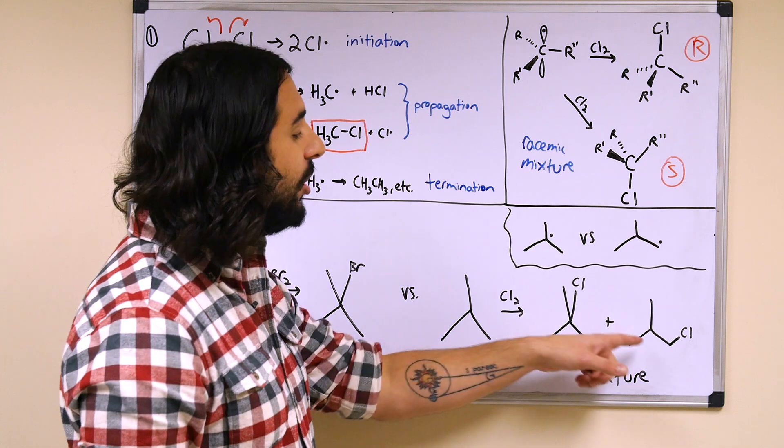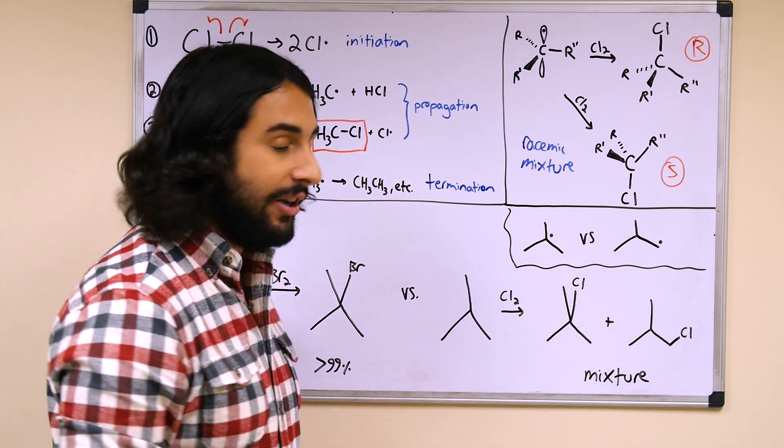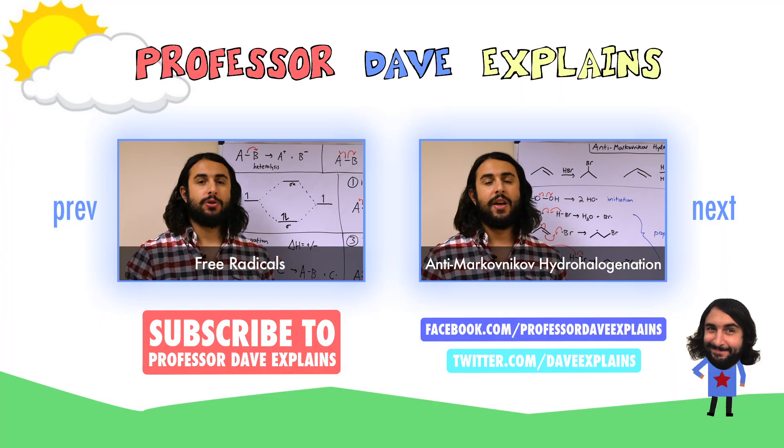That is why we see a lot less regioselectivity with chlorination because of the size. Thanks for watching guys, subscribe to my channel for more tutorials, and as always feel free to email me if you have questions. Professor Dave Explains at gmail.com.